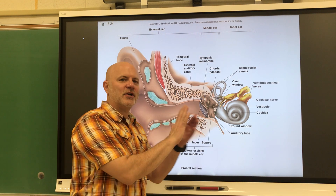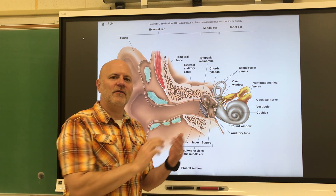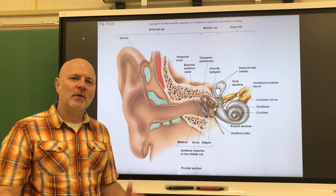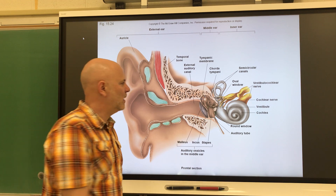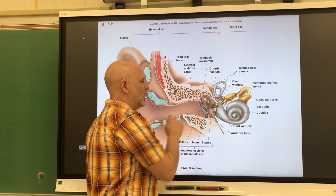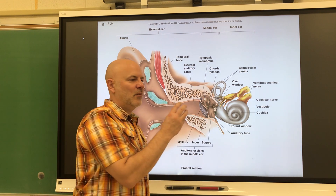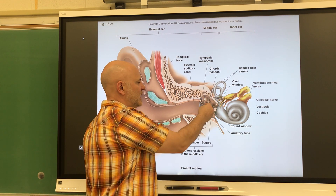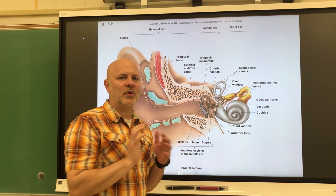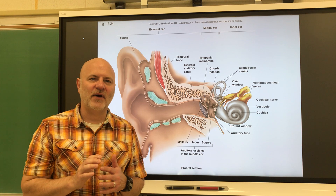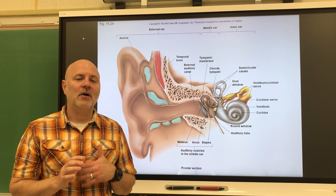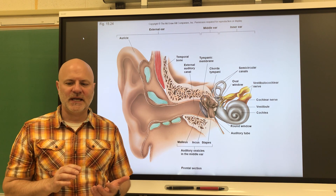When we have equal air pressures, we get good vibration and can hear very well. Unequal air pressures put pressure against the eardrum, prevent it from vibrating well, and we get muffled sounds.